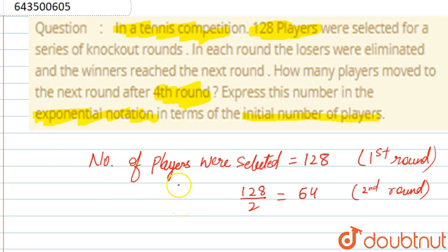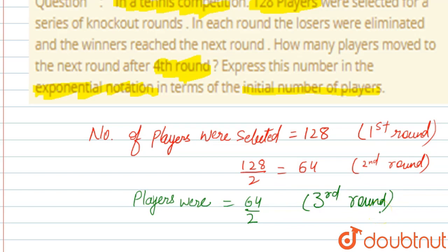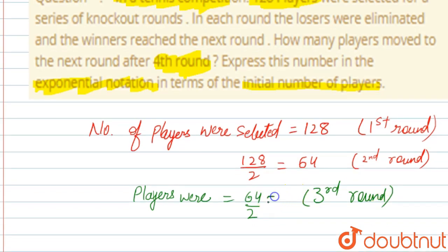In the third round, half of them are eliminated again. So players selected in the third round equals 64 divided by 2, because we take half of the second round players. That equals 32 players selected in the third round.